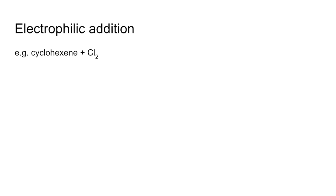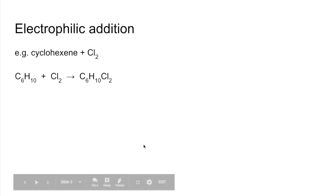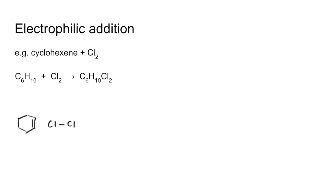The next mechanism is electrophilic addition, using cyclohexene and chlorine as the example. There's the overall reaction: cyclohexene C₆H₁₀ reacts with chlorine in an addition reaction, so two reactants become one product. In the mechanism, the cyclohexene and chlorine are side by side. Ordinarily chlorine is non-polar due to identical electronegativity, but as it gets closer to the carbon-carbon double bond, the electron density is repelled towards one end, creating a dipole across the molecule.